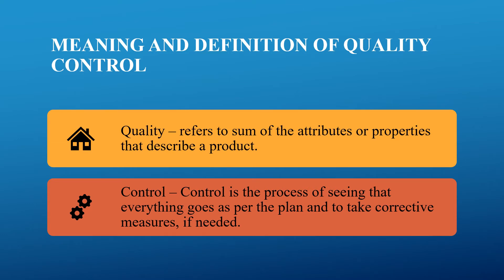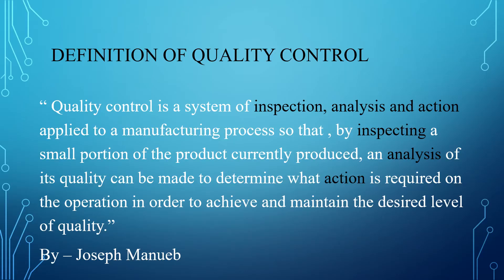So quality refers to the attributes necessary for a product, and control means ensuring that the production process maintains those attributes, characteristics and features of the product as required. According to the definition given by Joseph Manou, he stressed on three important words: inspection, analysis and action.